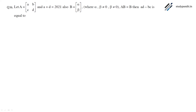In this question we have a matrix A, and A plus D equals 2021. Also, A times B equals B matrix. We have to find the value of AD minus BC.